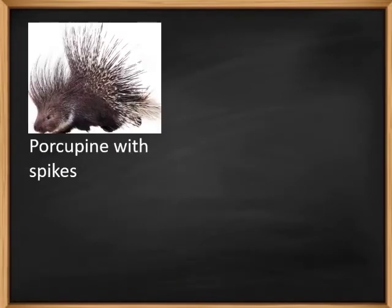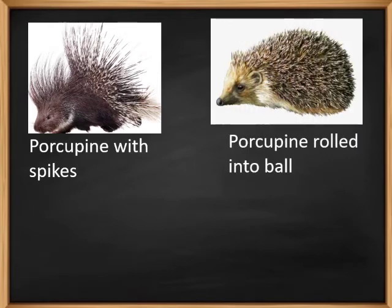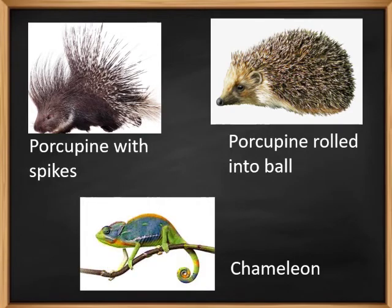In the case of porcupine, it uses its spikes to protect itself from enemies, or sometimes it rolls up into a ball, because of which its enemy thinks it is a stone or a prickly ball and leaves it alone. In the case of chameleon, it changes its color to hide itself from enemies.